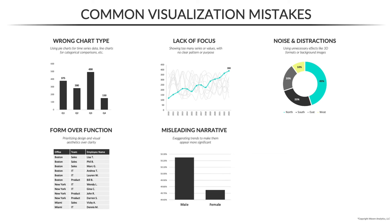Now here's a devious one: misleading narrative, which is about exaggerating trends or patterns to make them appear more dramatic or significant than they really are. So take a look at this column chart comparing results for men and women. Clearly this data skews heavily towards male, right?